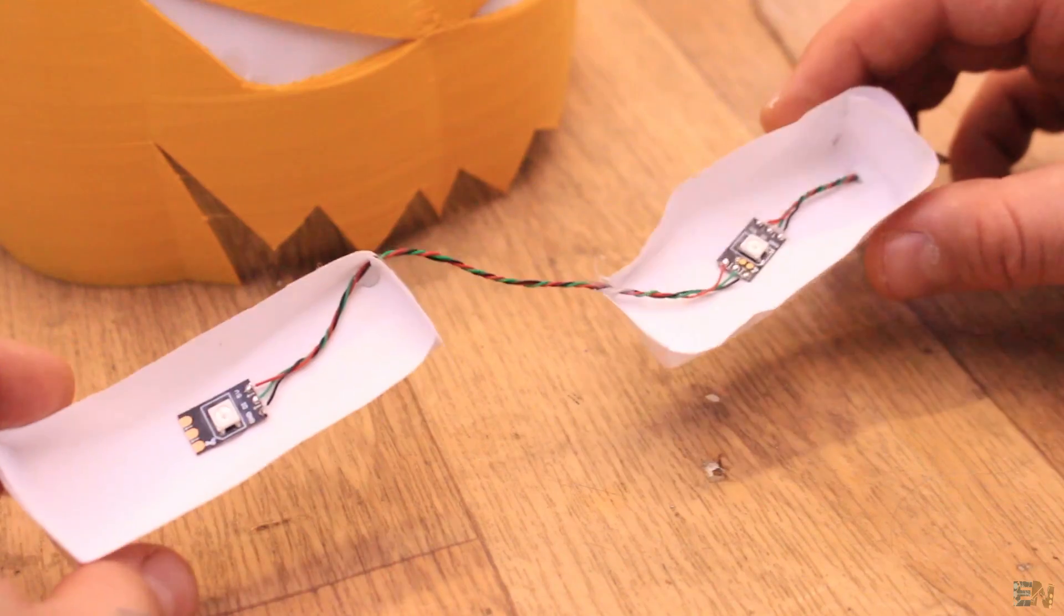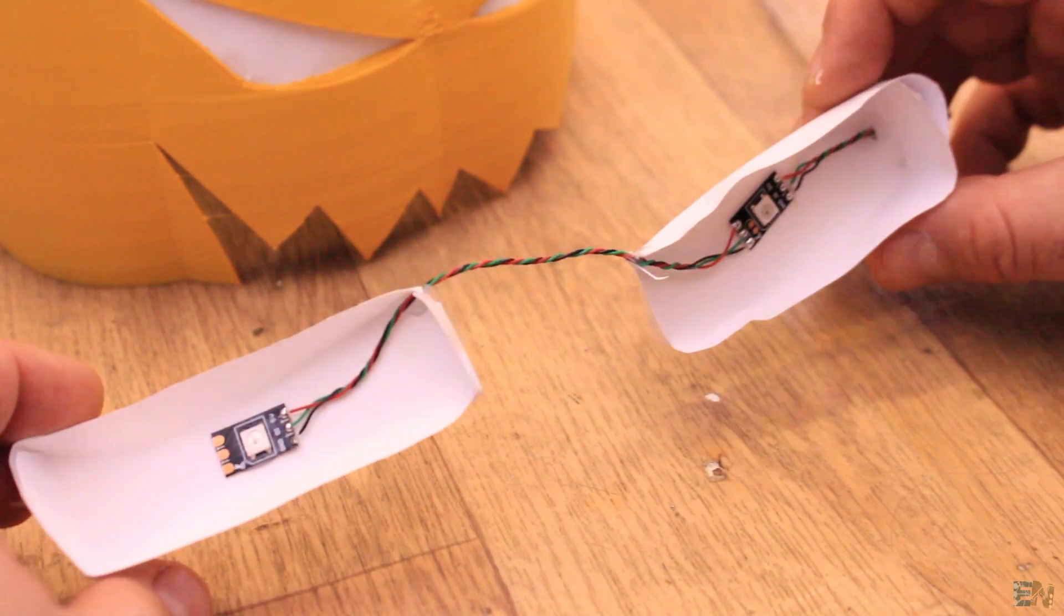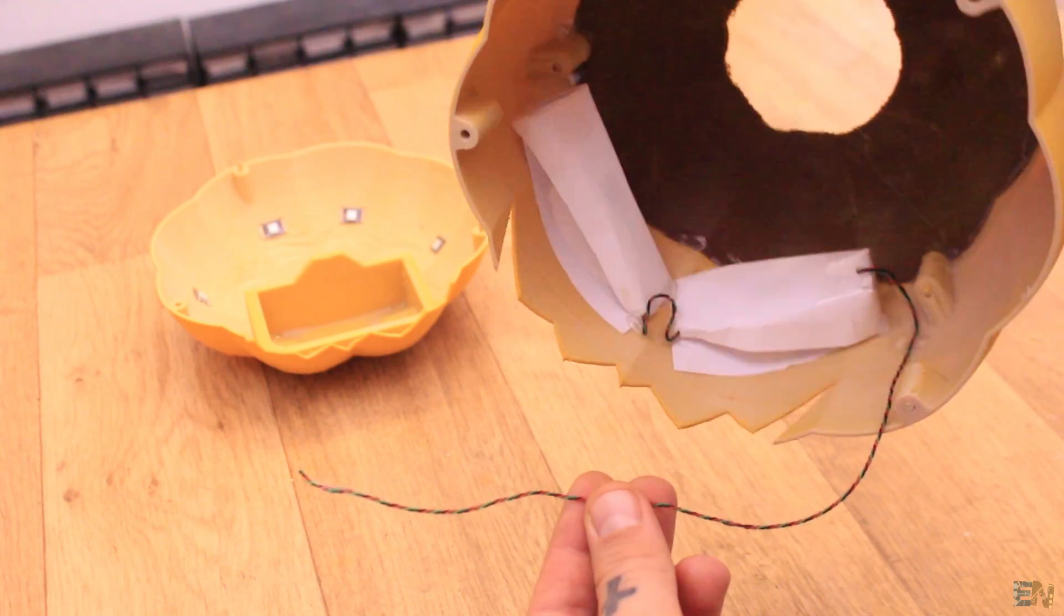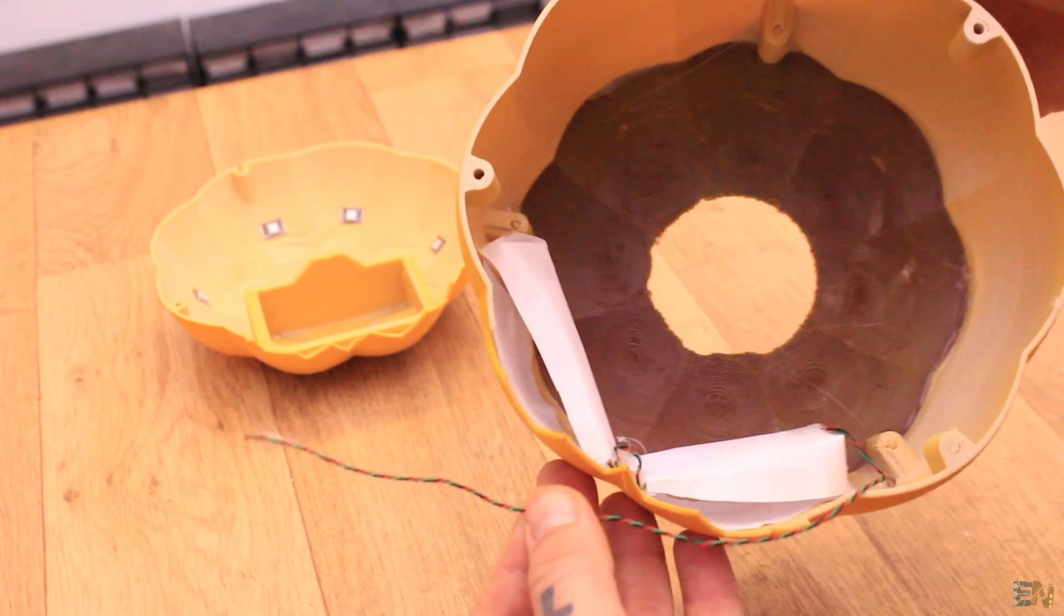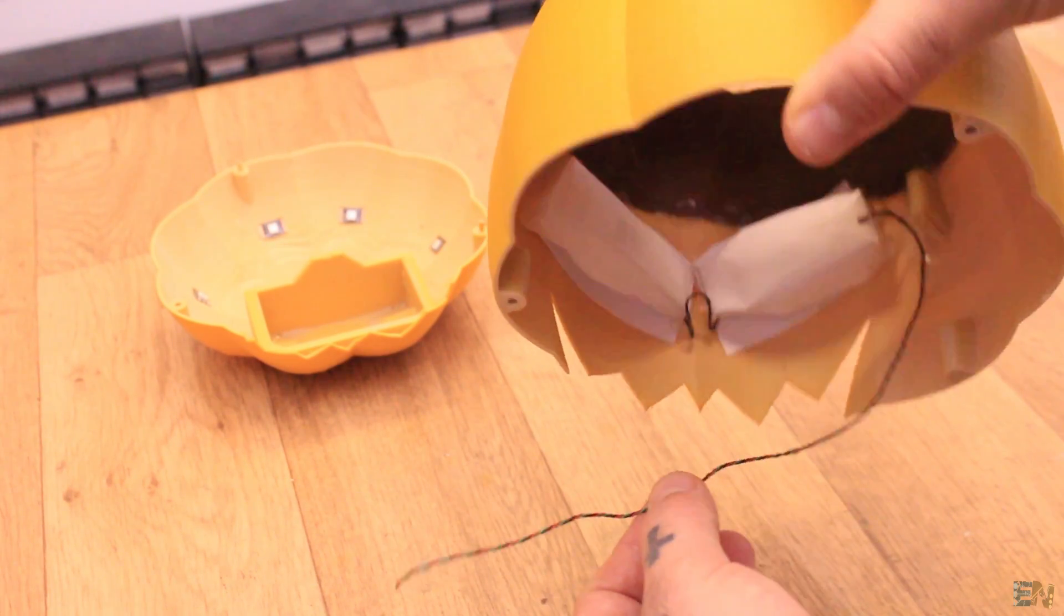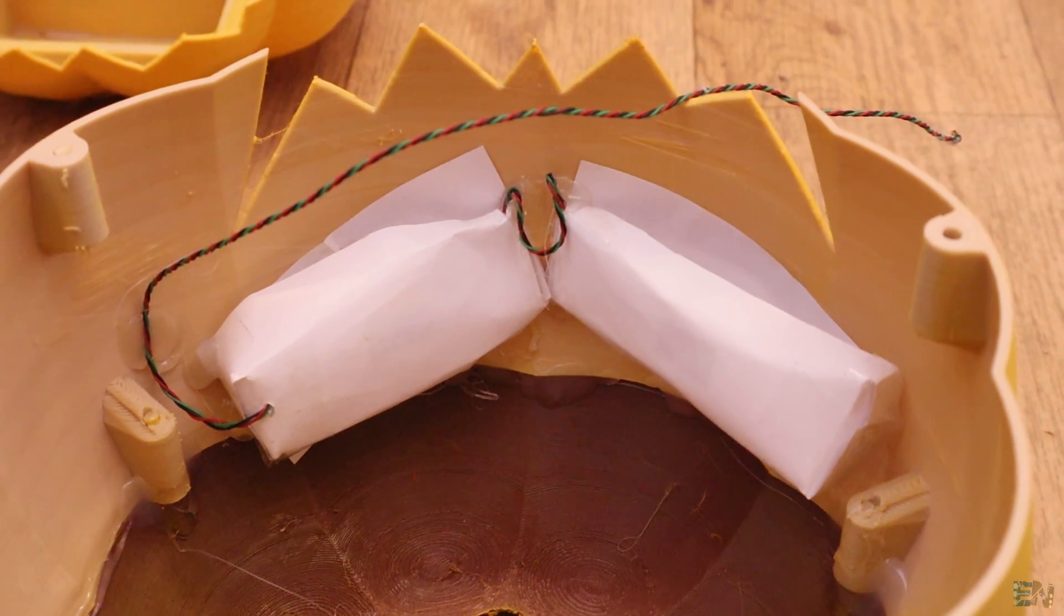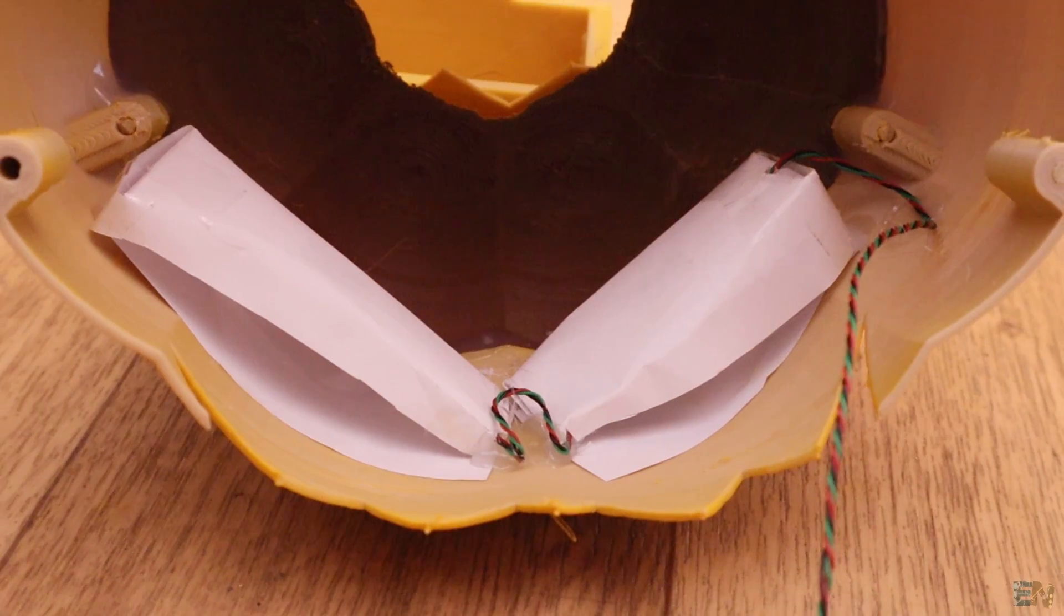Now I make some small cup shaped parts with some white paper. Then I glue one LED inside of each like this, with some thin wires as well. Now I glue these parts on the back of the eye like this. In this way, we could control each eye separately and by that control the color or turn the LED on and off.